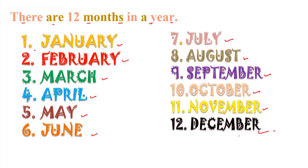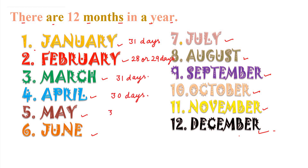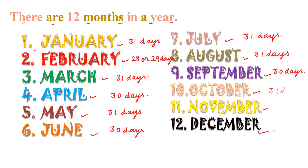Let's know how many days are in each month. January has 31 days. February has 28 or 29 days. March has 31 days. April has 30 days. May has 31 days. June has 30 days. July has 31 days. August has 31 days. September has 30 days. October has 31 days. November has 30 days. And December has 31 days.